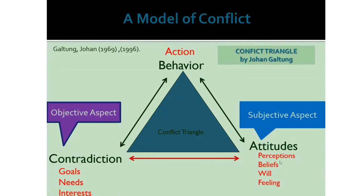These three factors are said to be very important to understand the conflict and the conflict parties. Attitude is linked with the conflict parties' perception, belief, and feeling — that is the subjective aspect. Contradiction is linked with materials or something valuable for the person — that is the objective aspect. So all conflict usually has both a subjective and an objective aspect.